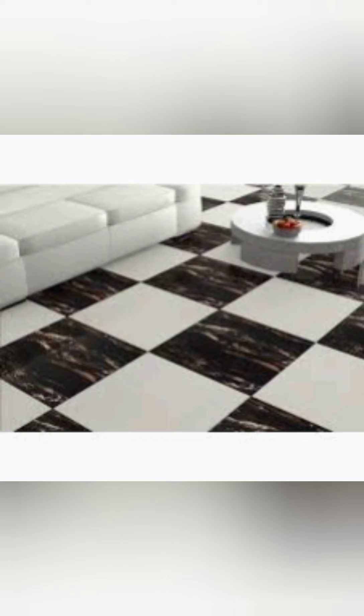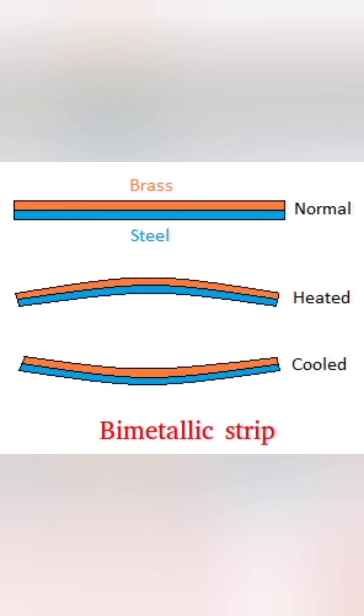A cement floor is not laid out in one piece because it would crack due to expansion in summer and contraction in winter. On the other hand, the floor is laid in small pieces with gaps in between to allow for expansion during summer.